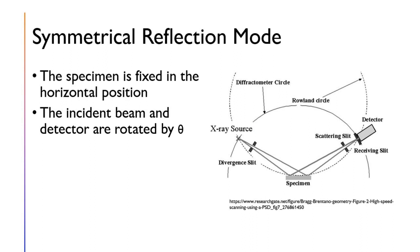Wide-angle diffraction can also be used for both symmetrical and asymmetrical reflection modes. In symmetrical reflection mode, the specimen is fixed in the horizontal position and the incident beam and detector are rotated by θ degrees, as seen in the image on the right where both the X-ray source and the detector can be rotated.